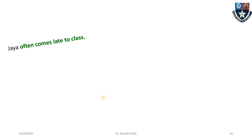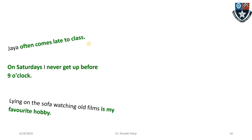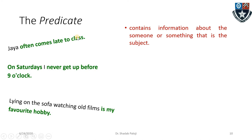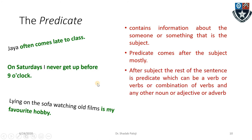Now looking at the same statements again: 'Jaya often comes late to class,' 'On Saturdays I never get up before nine o'clock,' 'Lying on the sofa watching old films is my favorite hobby.' If the first highlighted part is the subject, then obviously the remaining part is the predicate. The predicate contains information about that subject — whether living or non-living. The predicate should always come after the subject, and after the subject the rest of the sentence will be predicate.